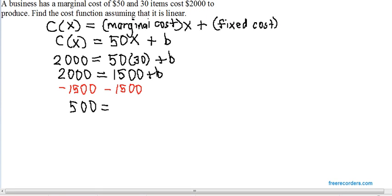On the right side, the $1,500 and the minus $1,500 cancel, leaving us with b.